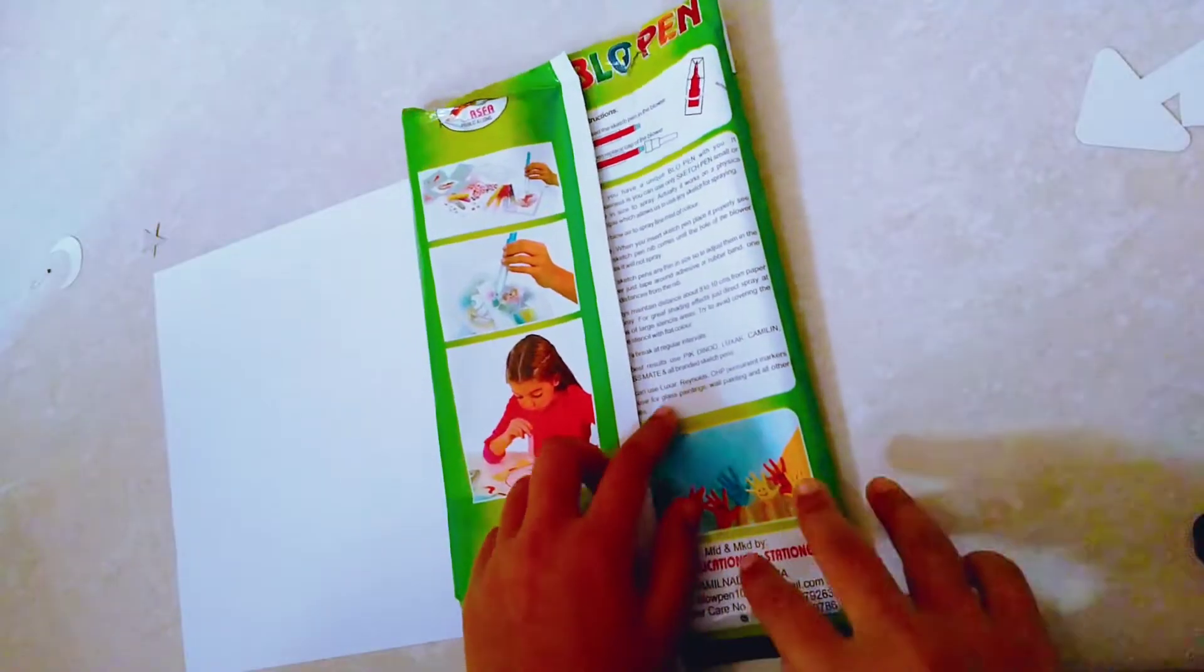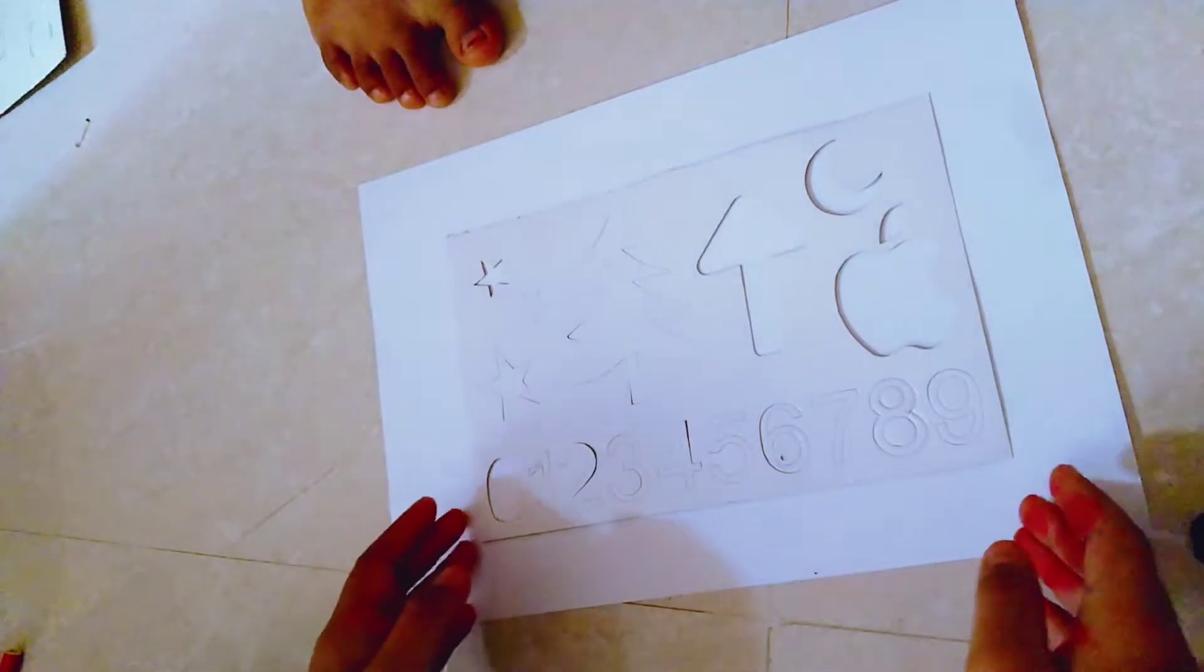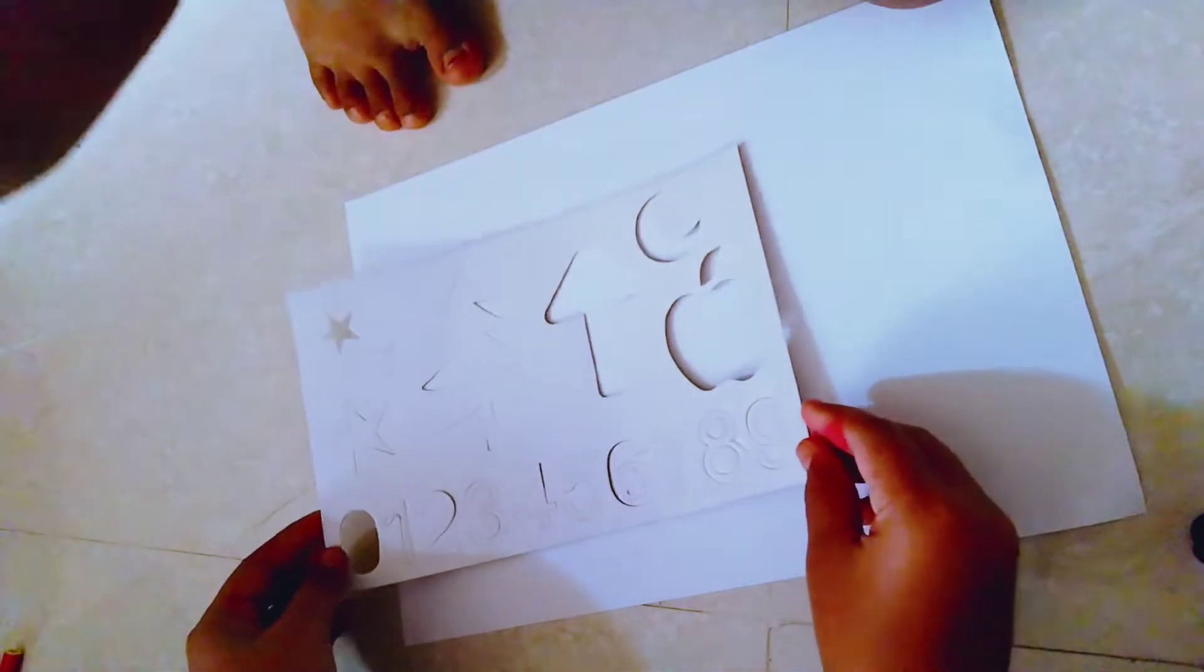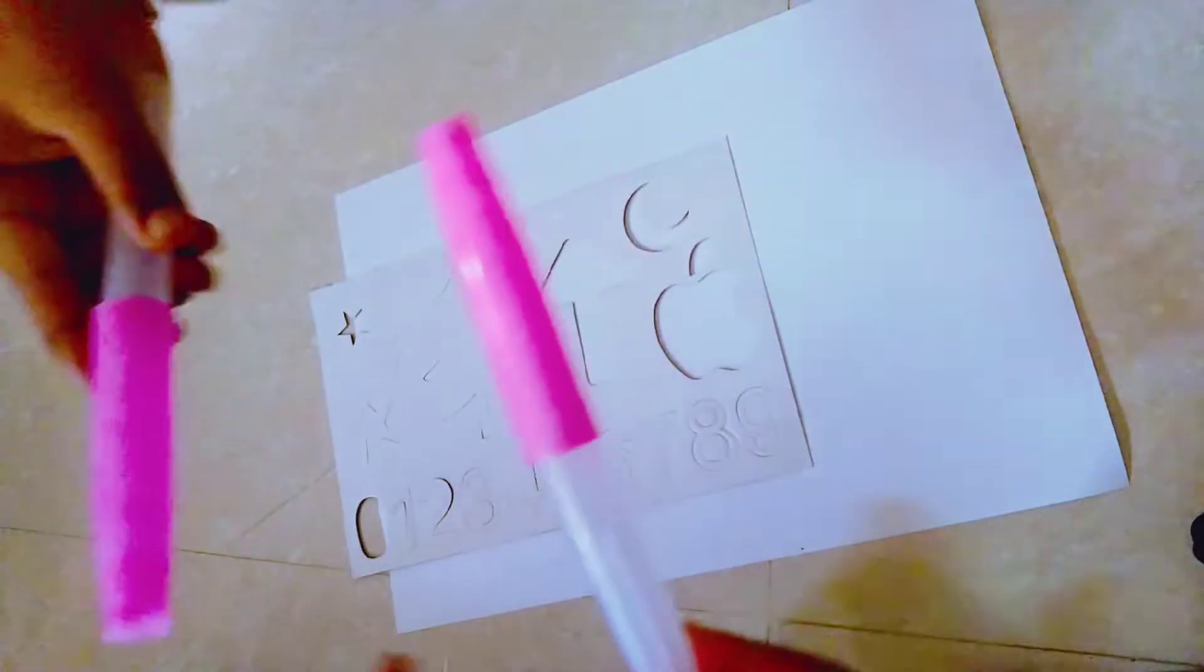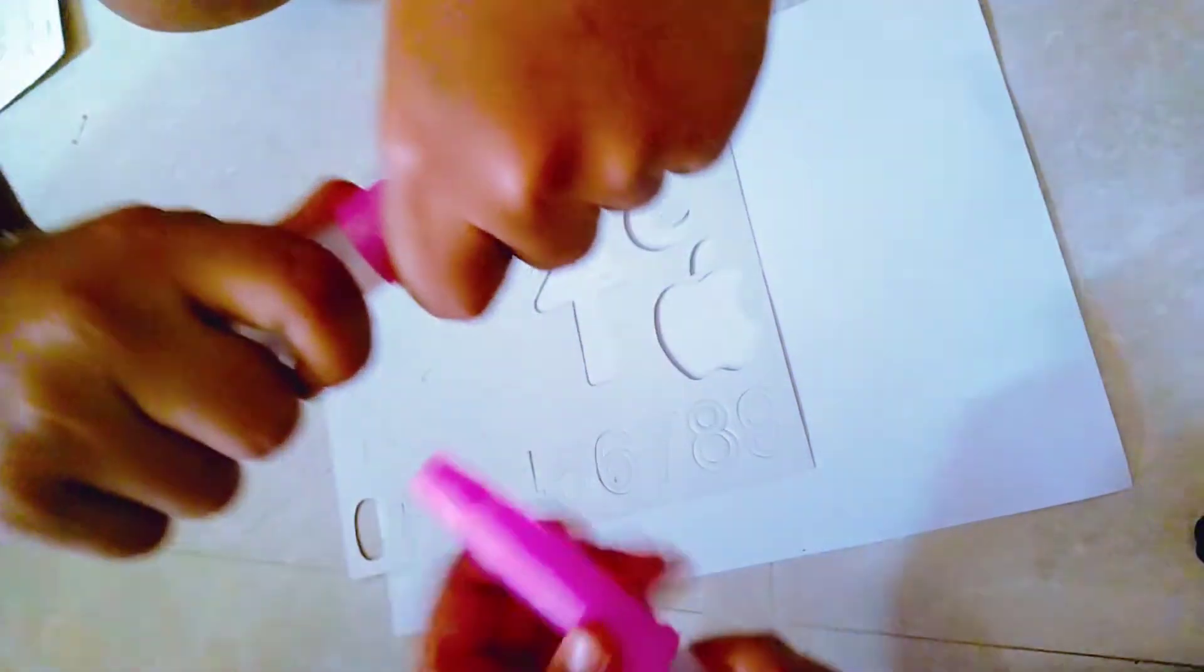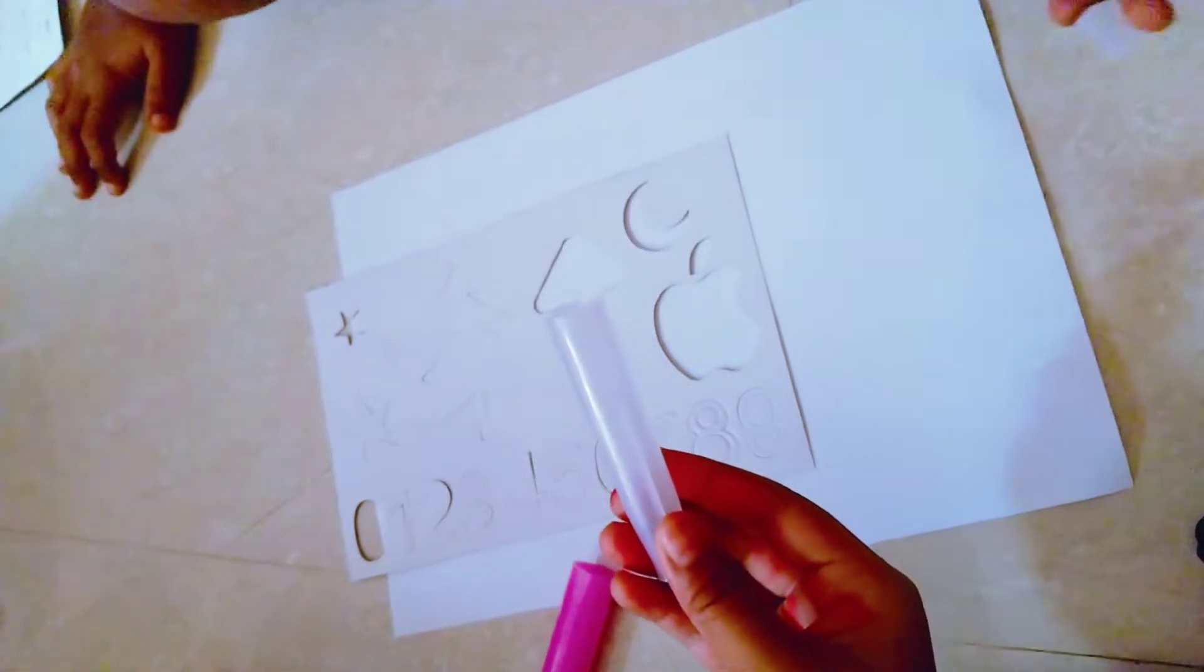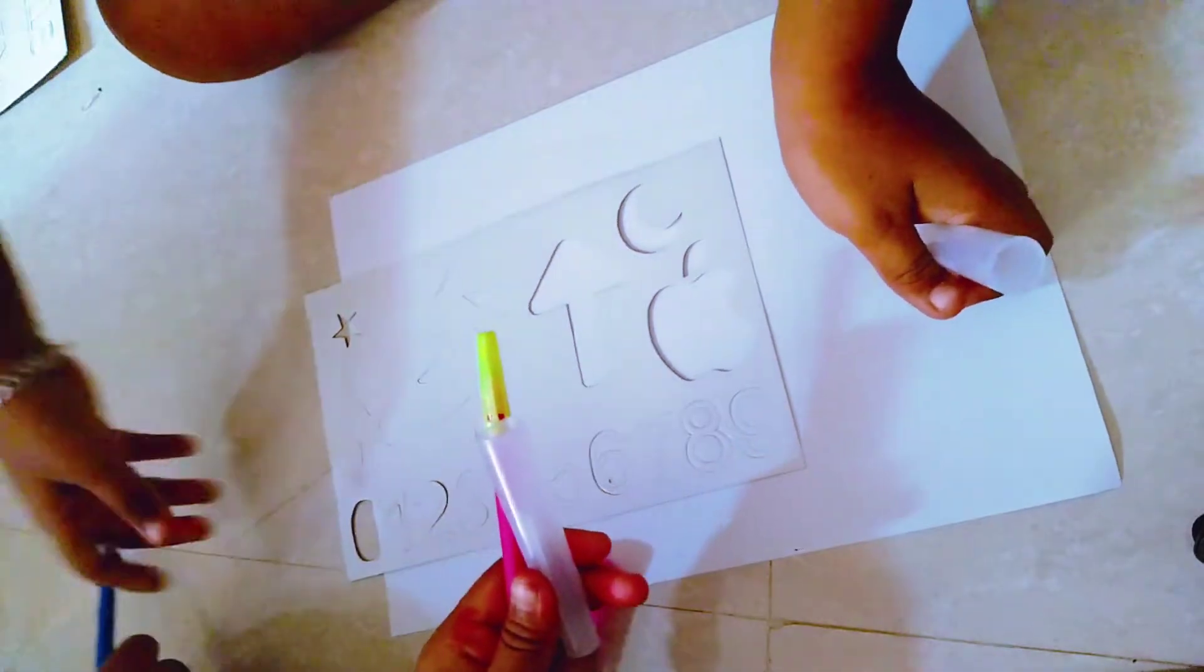So we have the blow pens. If you want, you can read these instructions also. Now let's start with the steps. We have the two blow pens. The first step is we have to open them and then choose the color that we want. So first I choose blue.